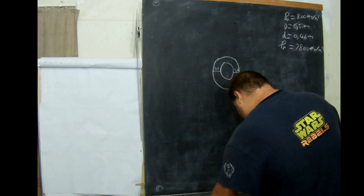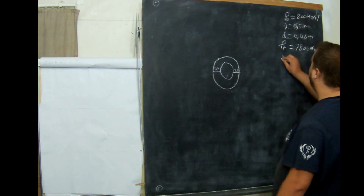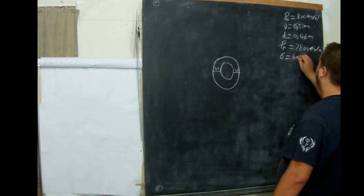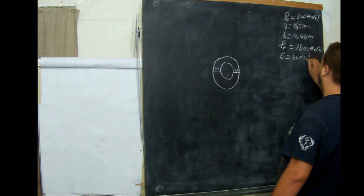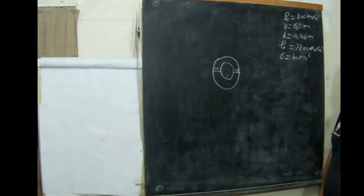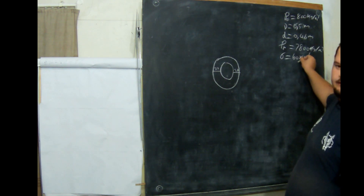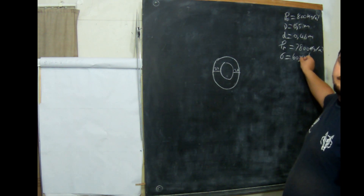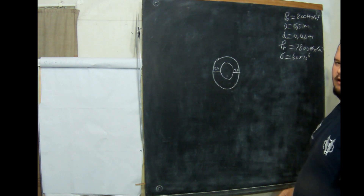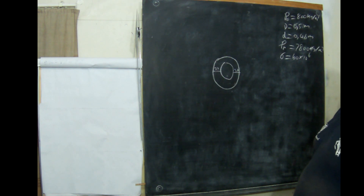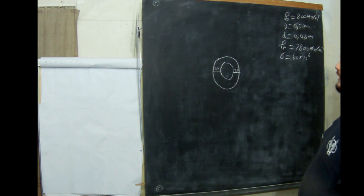Our allowable stress in the pipe: sigma is 60 times 10 to the 6. If this were gigapascals it would be 9, but it is megapascals. Mega means a million, so it's 60 million pascals.